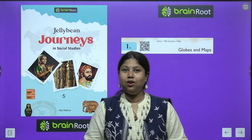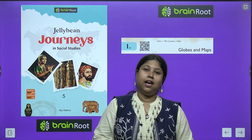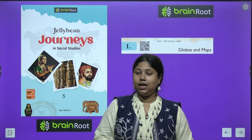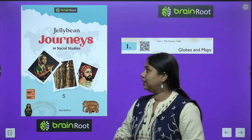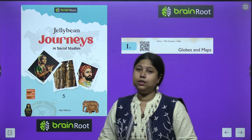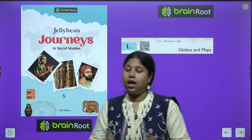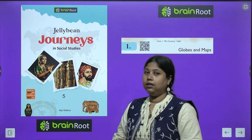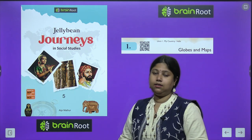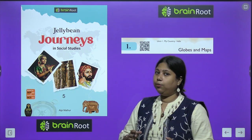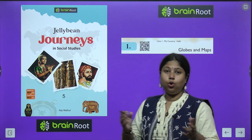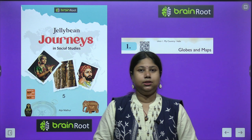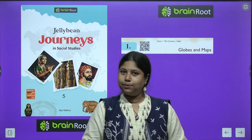Hi kids, welcome to your SST class. I am your teacher and mentor Anunya, and I am back with a new chapter in your book — Jellybean Journeys in Social Studies by Brainroot Publication. Today we are going to start Book 5 of this series, beginning with Chapter 1, whose title is Globes and Maps.